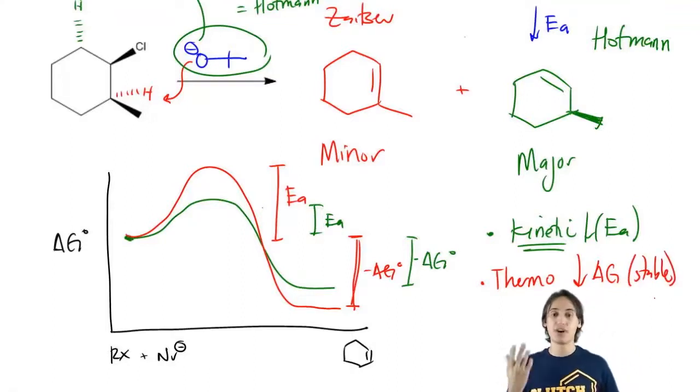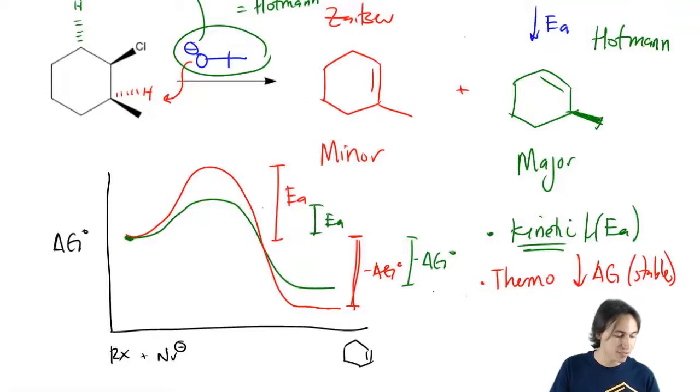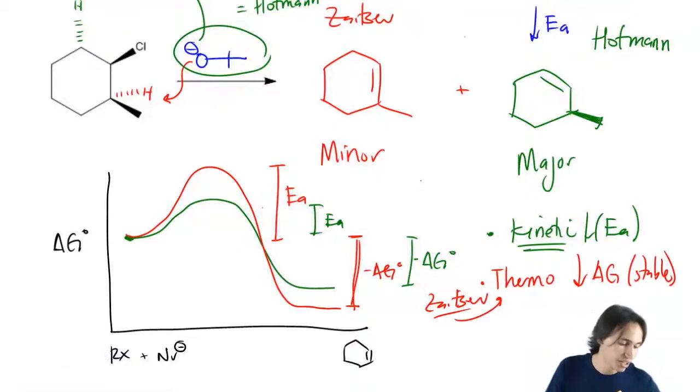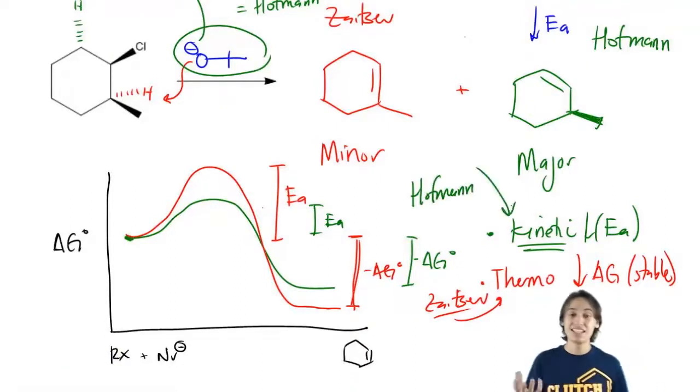That's the difference between Zaitsev and Hofmann. Basically, Zaitsev is thermodynamic control where all I care about is the stability of the end product. Whereas Hofmann is going to be kinetic control because all I care about is the one that's easiest to form or the one with the lowest activation energy.